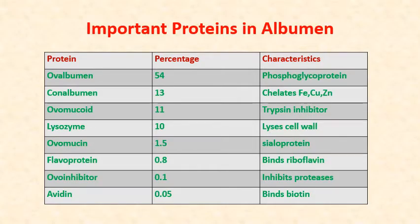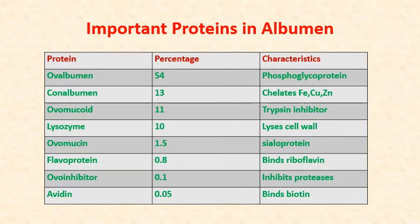Important proteins in albumin: the major one is ovalbumin at 54%, which is a phosphoglycoprotein. Next is conalbumin at 13%, which chelates iron, copper, and zinc. Then ovomucoid at 11%, which is a trypsin inhibitor. Then lysozyme at 10%, which has an antibacterial role and causes lysis of the cell wall of bacteria. Then ovomucin at 1.5%, which is a sialoprotein. Then flavoprotein, in very small amount, which binds riboflavin. Then ovoinhibitor at only 0.1%, which inhibits proteases. And avidin, in minute quantity, which binds biotin.